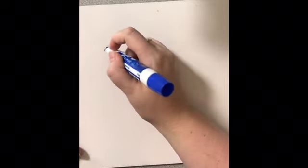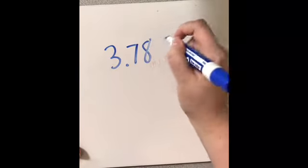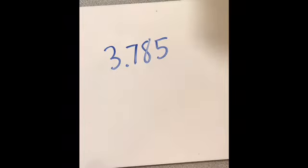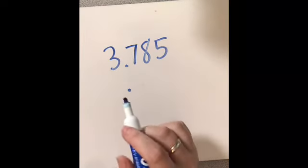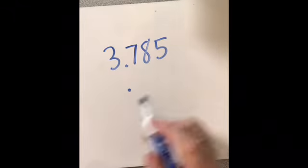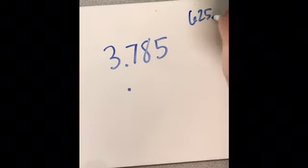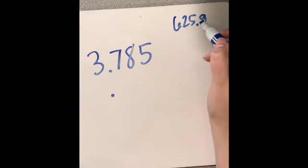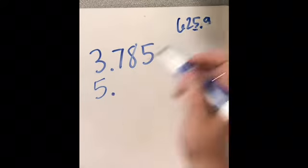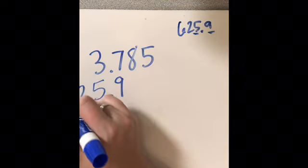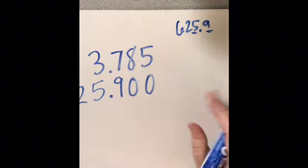So we have to add 3 and 785 thousandths, and we need to line up our decimals. That's the most important part. Go ahead and put your decimal underneath. So we are adding 625 and 9 tenths. You look and see, here's my decimal. So on this side is my 5, so it goes here. On this side is my 9. Now you can work your way back. So then you need a 2 here, a 6 here, and you can fill in zeros here and here.